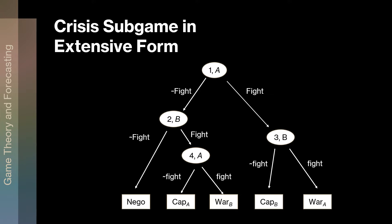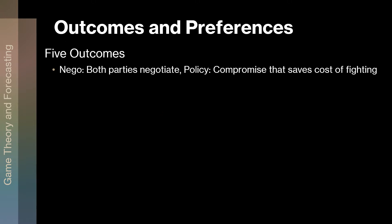Let's look at these outcomes in more detail as well as preferences over them. There are five outcomes. Negotiate: both parties negotiate. The policy outcome is a compromise that saves the cost of fighting. The idea is that negotiations will be contextualized by the power relationship and expectation. Bueno de Mesquita has a whole expected utility equation that takes into account power, salience, and what's at stake.